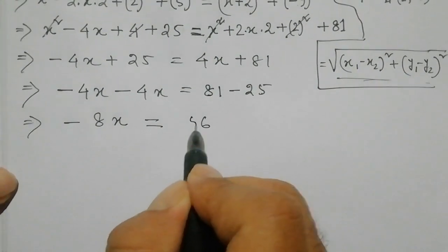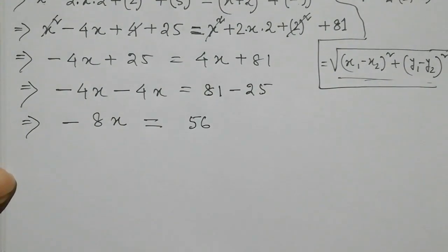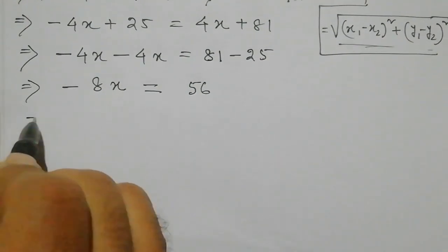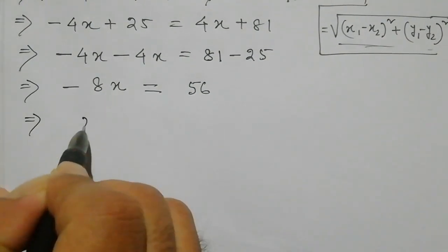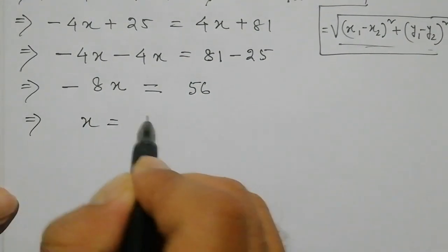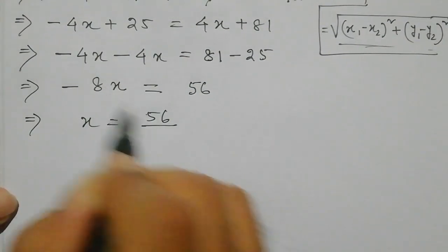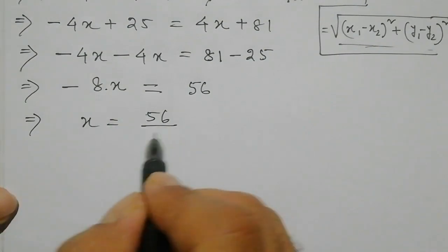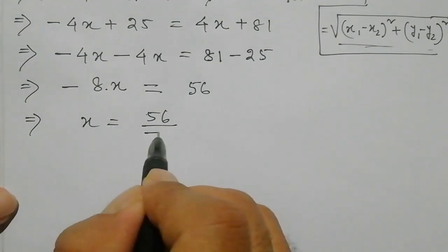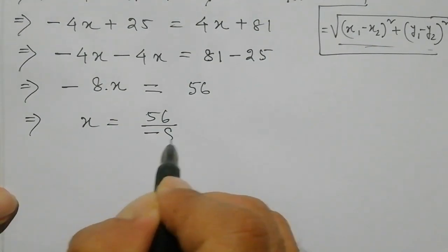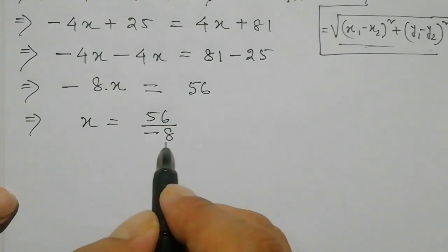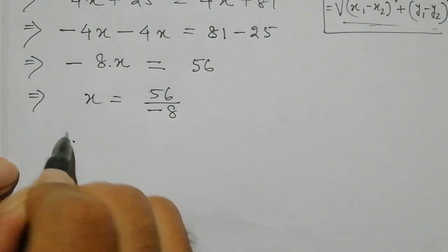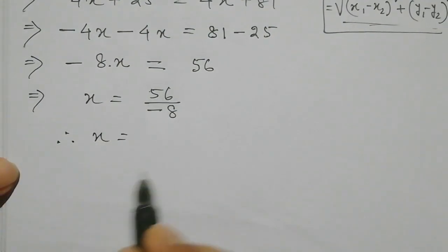7 over 2 is 5 — so 56. So x is equal to 56. So x is equal to 56 by 7. So x is equal to 57.